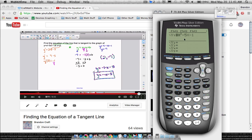Go ahead and type in the equation y equals x squared minus 5x minus 1. We want the equation of the tangent line at x equals 2, so I'm just going to go ahead and type that in.